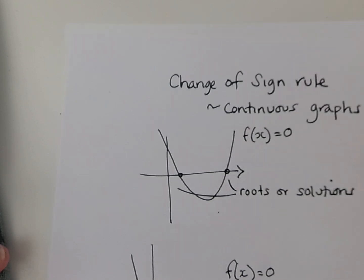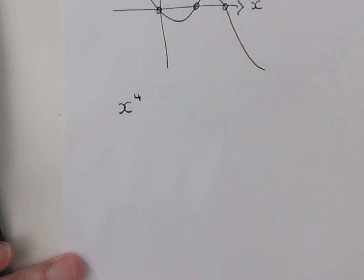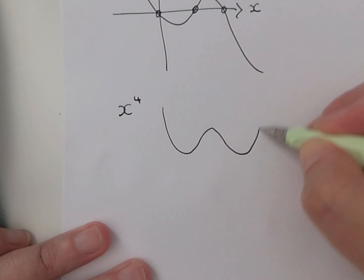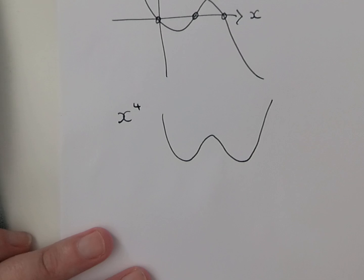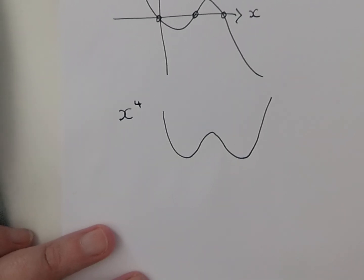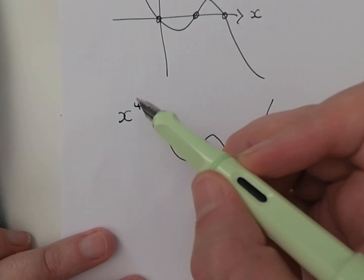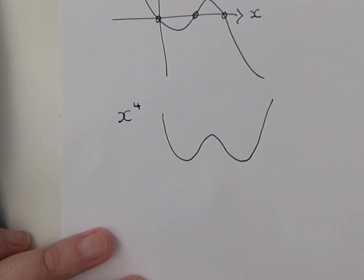The same would also be true of, for example, a quartic graph, which has a power of four as its highest power. That would be something that looks like a sort of W or an M shape depending which way around you've got it. That is also a continuous graph.